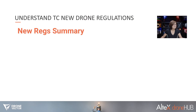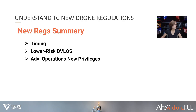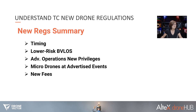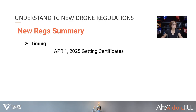Let's get into the regulation details. We'll look at a few topics: first is timing, the lower risk BVLOS operations, and the new privileges added to advanced operations, the update for micro drones at advertised events, and a recap on the fees increase. April 1, 2025 is when we can start getting certificates and preparing for the new regulations and operations, and then November 4th is when we can begin operations.